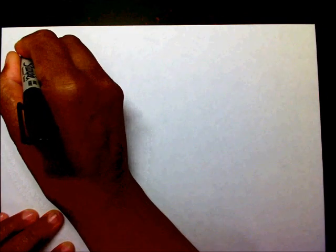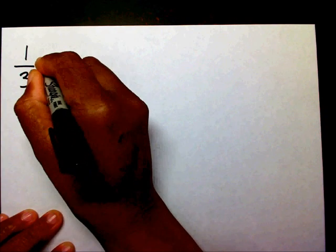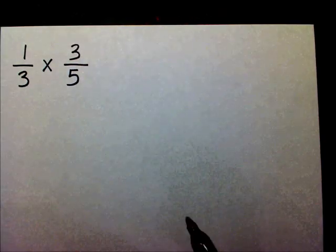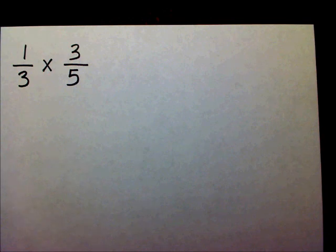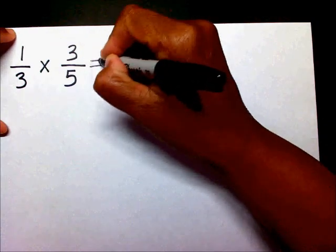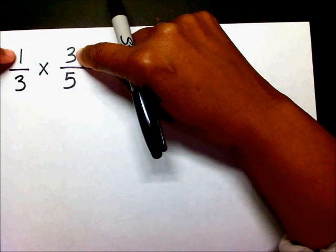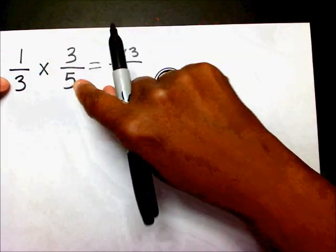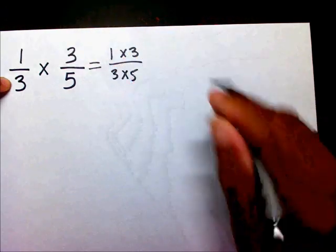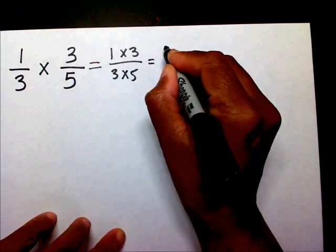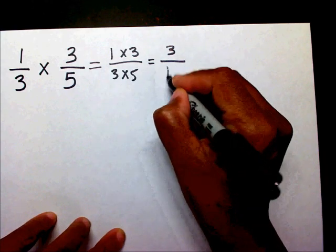Say I had one-third times three-fifths. Whenever you multiply fractions, the only thing you need to do is multiply your numerators, multiply these two numbers, and multiply your denominators. So we're going to multiply the top numbers together, one times three, and we're going to multiply the bottom numbers together. One times three is three, three times five is fifteen.